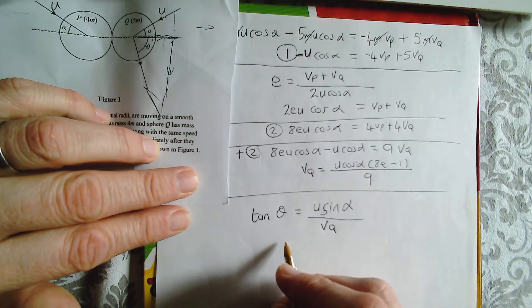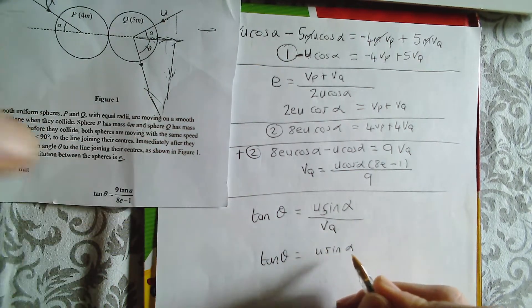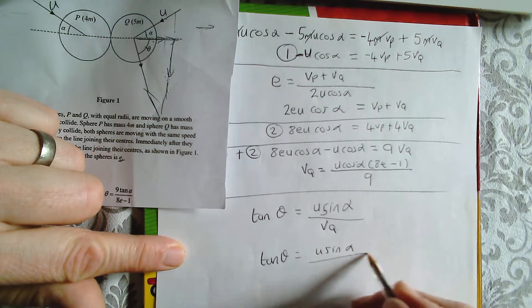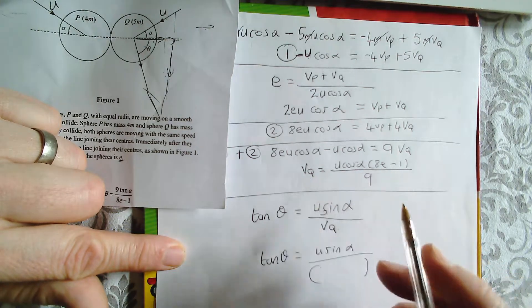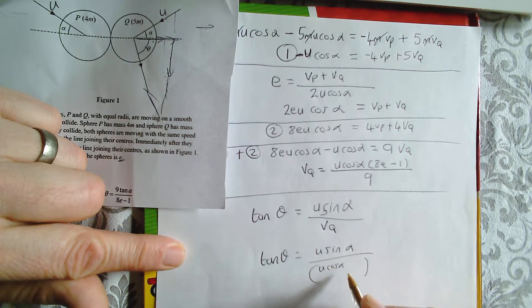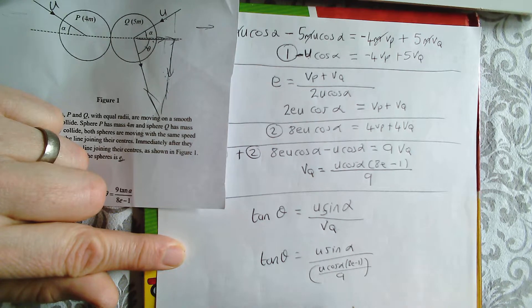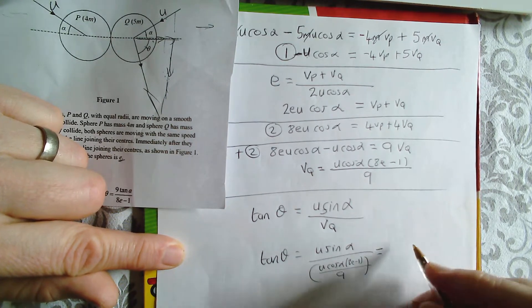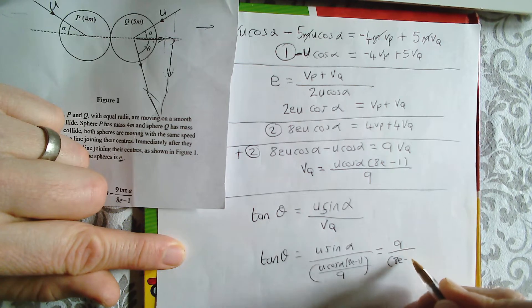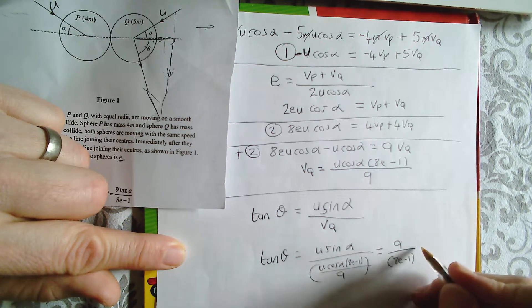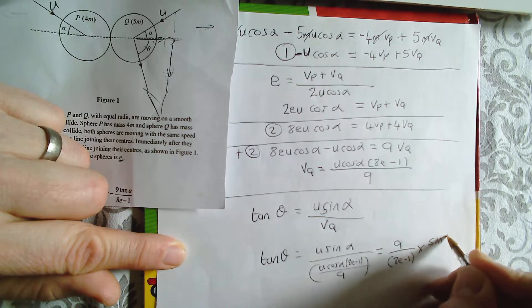So, that's the theory behind it. That's why we're able to do this. So, we know this is perpendicular to the line of centres. This is parallel to the line of centres. Well, what's going on here? I can make some replacements, can't I? I know tan theta, therefore, is u sine alpha all over VQ. Well, what was VQ? It was this. So, u cos alpha, 8E minus 1, all over 9. Well, let's play around with this a bit. I'm going to have 9, I'm going to put the bits that are not trig there, 9 over 8E minus 1. I'm just playing with the algebra there now. And I'm going to have sine alpha over cos alpha.